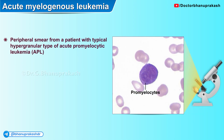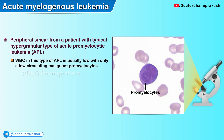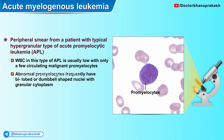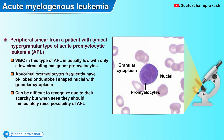Here is another peripheral smear from a patient with the typical hypergranular variant of acute promyelocytic leukemia. The white cell count in this type of APL is usually low with only a few circulating malignant promyelocytes. The abnormal promyelocytes frequently have bilobed or dumbbell-shaped nuclei with granular cytoplasm, and they can often be difficult to recognize due to their scarcity, but when seen they should immediately raise the possibility of acute promyelocytic leukemia.